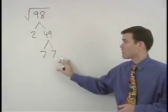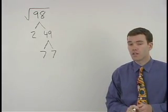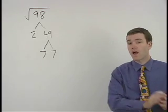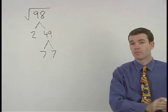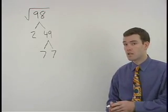What we're looking for in our factor tree are pairs of factors that are the same. If a factor pairs up then it will come out of the radical. If a factor does not pair up then it stays inside the radical.